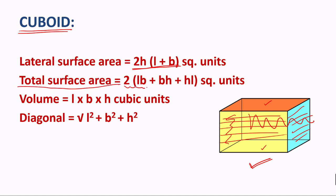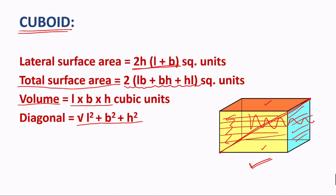If we talk about the total surface area of a cuboid, it is 2(lb + bh + hl) — that is 2 into (length × breadth + breadth × height + height × length). Similarly, the volume of the cuboid is lbh — length × breadth × height. And if we want to find the diagonal of a cuboid, that will be the longest line segment inside it, and its length will be √(l² + b² + h²).